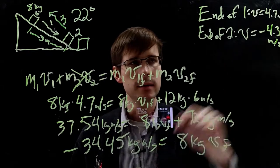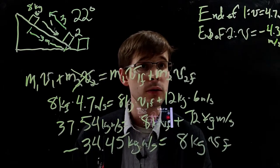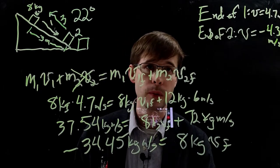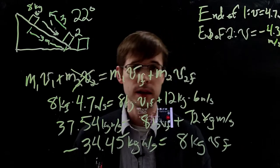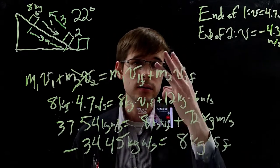And so when we do that, we get that at the end of part two, the velocity is going to be negative 4.3 meters per second. Let's get rid of this, and we're going to keep going on to part three.